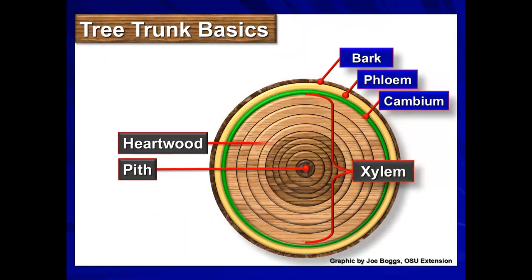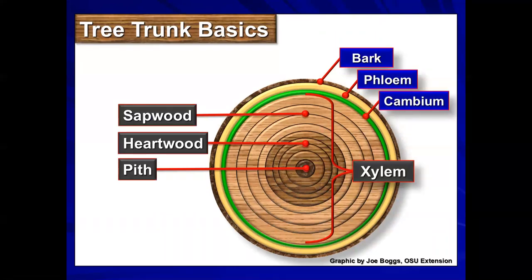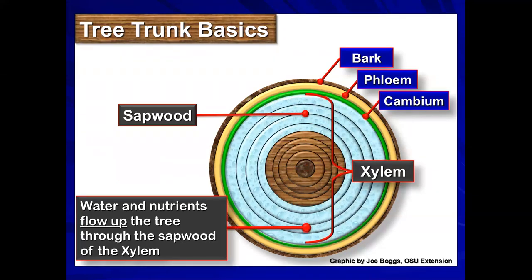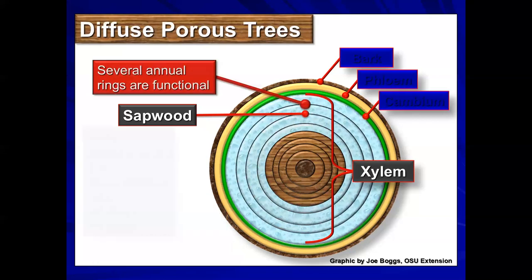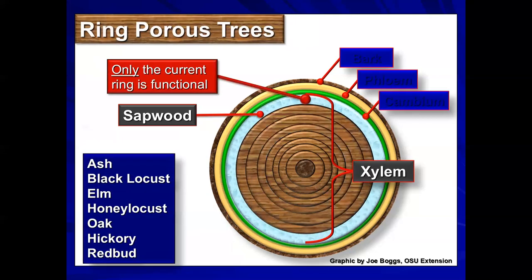I've got to credit Joe Boggs with these next couple of awesome slides reminding us of how this impacts a tree. So this is a cross-section of a tree. You can see the outer layer is the bark where the ash borer eggs were laid, and the layer just beneath that is the phloem — that's the layer where the ash borer larvae feed. Below that is the cambium that makes new cells, and then the sapwood, which is part of the xylem. The xylem layer is where water and nutrients flow up the tree. In diffuse-porous trees, water and nutrients flow through many rings, but in ring-porous trees like ash, only one layer of the sapwood is active.